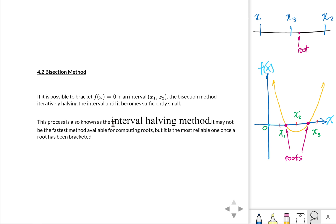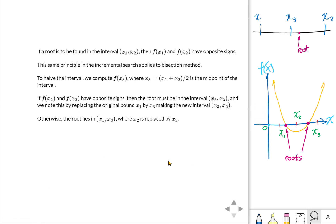This process is also known as the interval halving method. It may not be the fastest method available for computing roots, but it is the most reliable one once a root has been bracketed. If a root is to be found in an interval x1 to x2, then f of x1 and f of x2 have opposite signs — the same principle as in the incremental search applies to the bisection method.